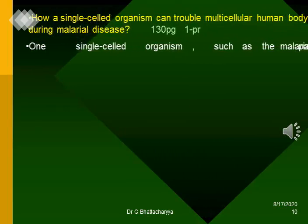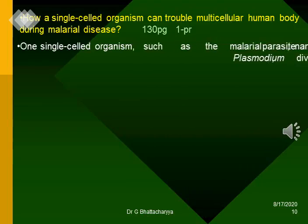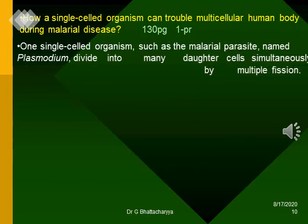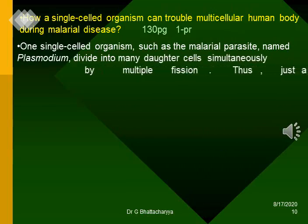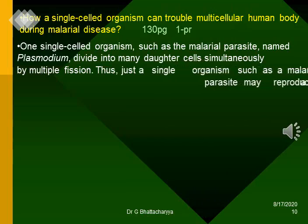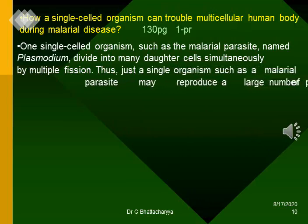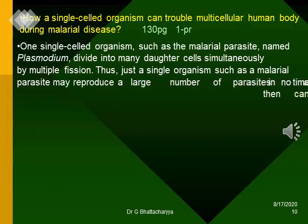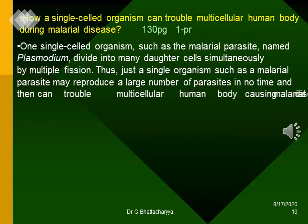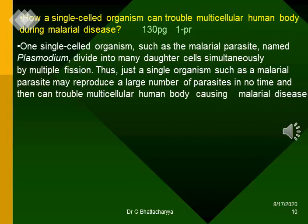How can a single-cell organism trouble a multicellular human body during malarial disease? One single-celled organism such as the malarial parasite Plasmodium divides into many daughter cells simultaneously by multiple fission. Thus, just a single organism such as a malarial parasite may reproduce a large number of parasites in no time and can then trouble the multicellular human body, causing malarial disease.